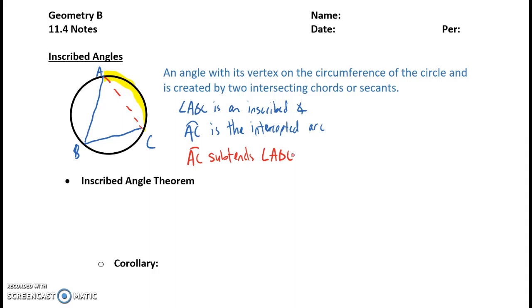So our first theorem, the inscribed angle theorem, which is basically the foundation of all the other theorems we're going to be talking about today, basically says that the measure of your inscribed angle is one-half the measure of its intercepted arc.